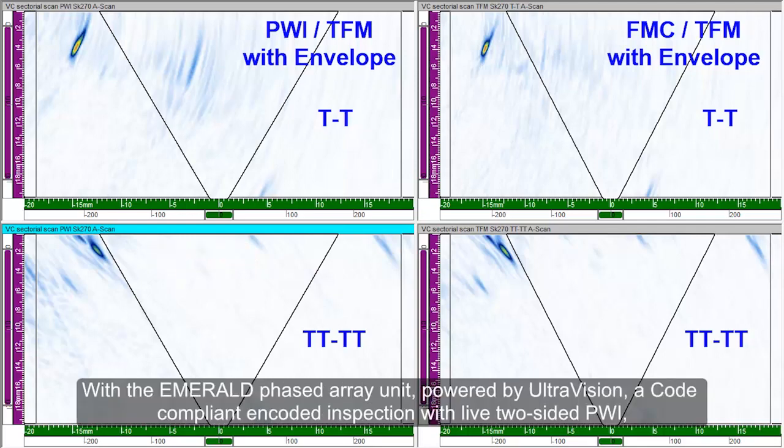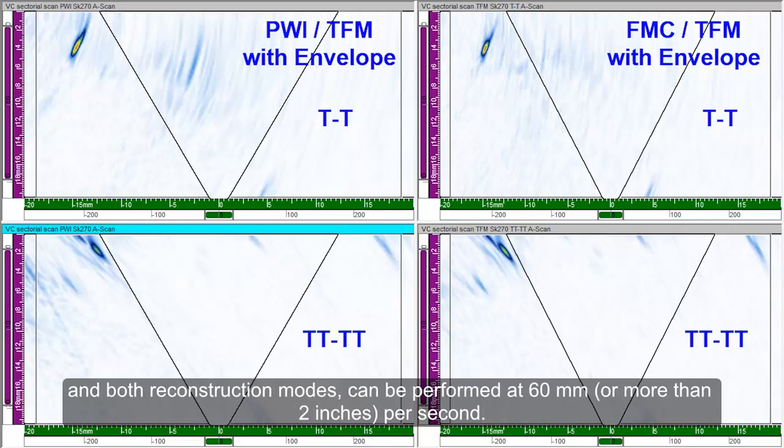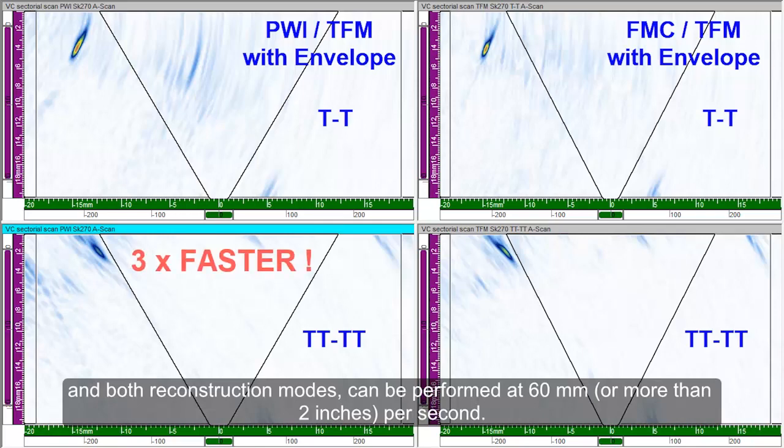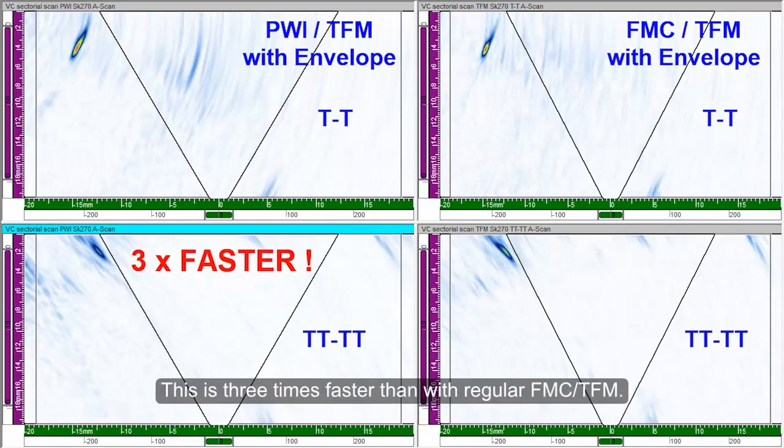With the new Emerald Phase Array unit powered by UltraVision, a code-compliant encoded inspection with live two-sided PWI and both reconstruction modes can be performed at 60 mm or more than two inches per second. This is three times faster than with regular FMC TFM.